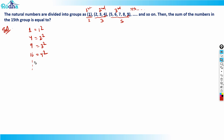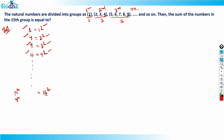So obviously, in the 15th group — first group, second group, third group, fourth group — in the 15th group the last element will be 15 squared. In the first group the last element is one squared, in the second group it's two squared, in the third group it's three squared, in the fourth group it's four squared. So in the 15th group the last element is 15 squared, which is 225.